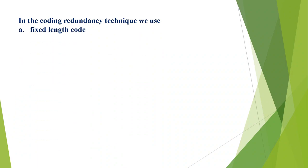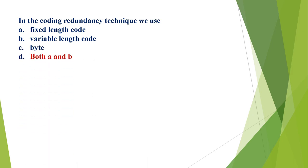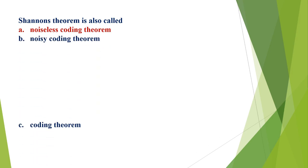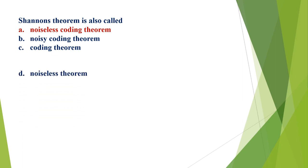For further date compression we use: A) fixed length code, B) variable length code, C) byte, D) both A and B. The correct option is D, both A and B. Shannon's theorem is also called: A) noiseless coding theorem, B) noisy coding theorem, C) coding theorem, D) noiseless theorem. The correct option is A, noiseless coding theorem.